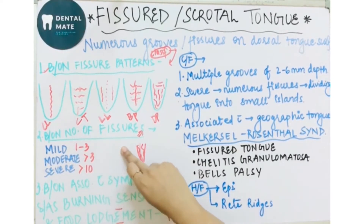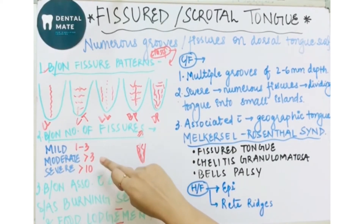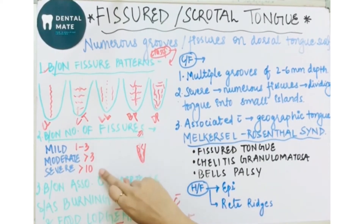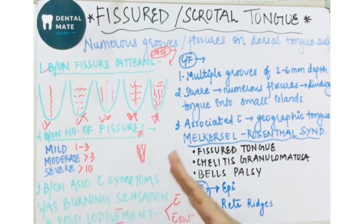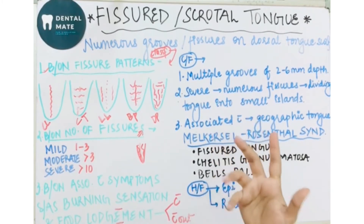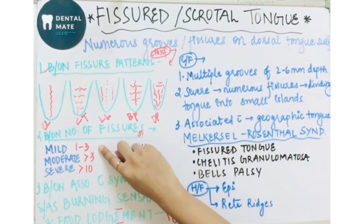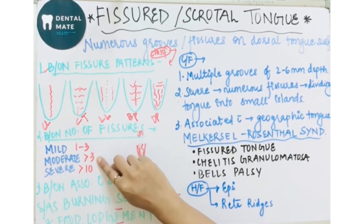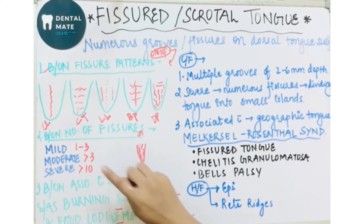Based on the number of fissures, it can be classified as mild, moderate, or severe. Mild means 1 to 3 fissures are present; moderate means more than 3 fissures; and severe means more than 10 fissures.